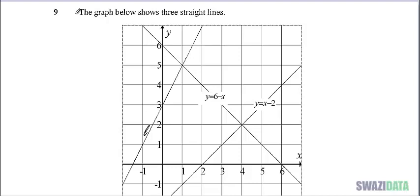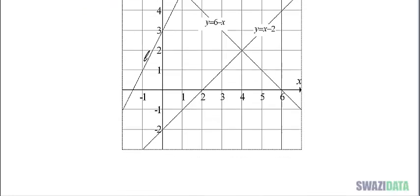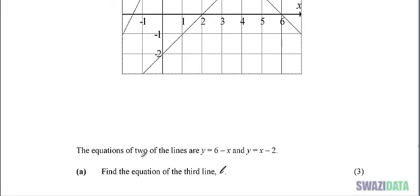Question number nine says the graph below shows three straight lines. It's not this line y equals six minus x, it's not a line. Let's see y equals x minus two. The equations of two of the lines are y equals six minus x and y equals x minus two. Part a says find the equation of the third line l.